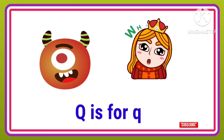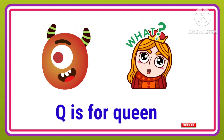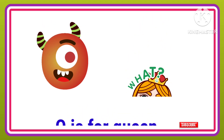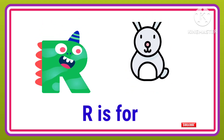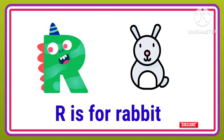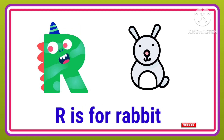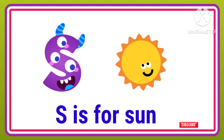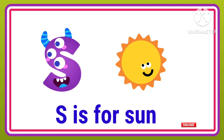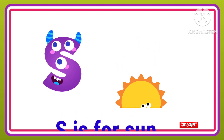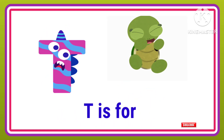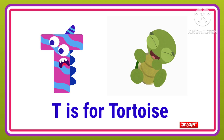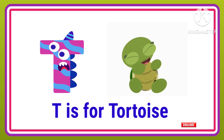Q is for Queen, Q-Q-Queen. R is for Rabbit, R-R-Rabbit. S is for Sun, S-S-Sun. T is for Toad, T-T-Toad.